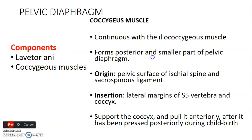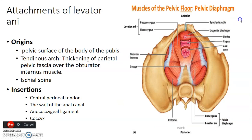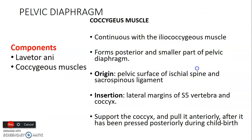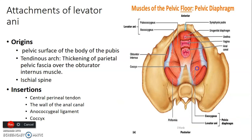The pelvic diaphragm is made up of levator ani and coccygeus muscles. The coccygeus is continuous with iliococcygeus muscle and forms the posterior smaller part of the pelvic diaphragm, originating from the pelvic surface of the ischial spine and sacrospinous ligament. It inserts on the lateral margin of S5 vertebra and the coccyx, and usually supports the coccyx.